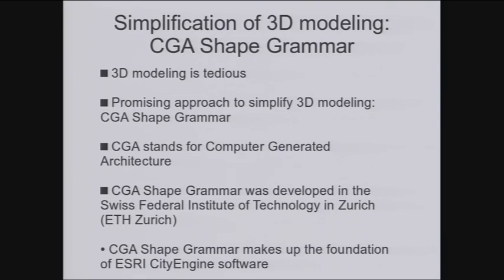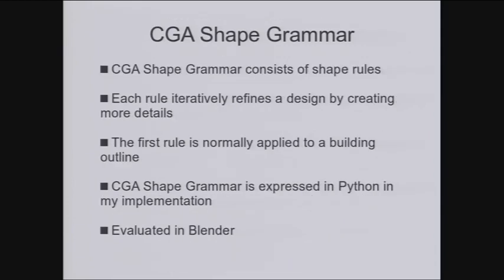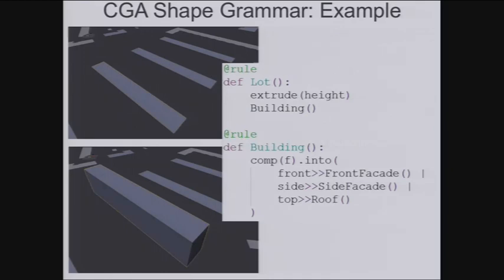And by chance I came across an interesting approach to simplify 3D modeling. It's called CGA shape grammar. CGA stands for computer-generated architecture. It was developed in the Swiss Federal Institute of Technology in Zurich, known as ETH Zurich. CGA shape grammar makes up the foundation of ESRI CityEngine software. And this software can generate large-scale photo-realistic urban environments. So CGA shape grammar consists of shape rules. Each rule iteratively refines a design by creating more details. And the first rule is normally applied to building outline, which could come from OpenStreetMap data. And CGA shape grammar is expressed in Python in my implementation. And it's evaluated in Blender. So let's see a simple example.